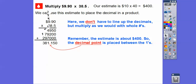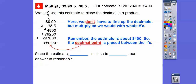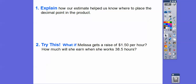Our estimate is 400, so that means we take that number and put the decimal so it rounds to the hundreds spot. So it's going to be $381.15 — we move the decimal so it fits in the hundreds spot, representing our hundreds right there. Since the estimate of $400 is close to $381.15, our answer is reasonable. Melissa earned $381.15 last week.